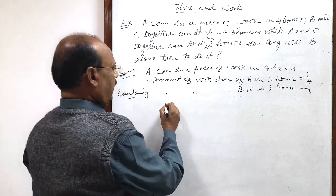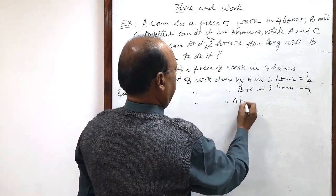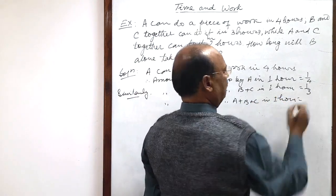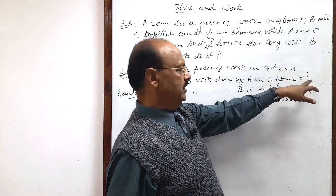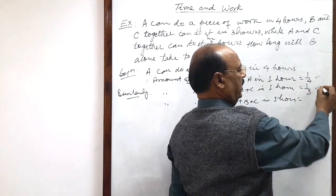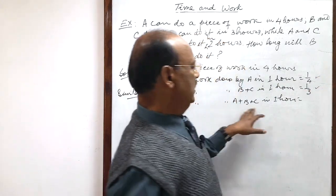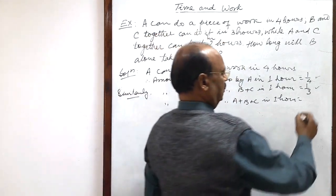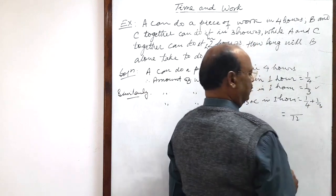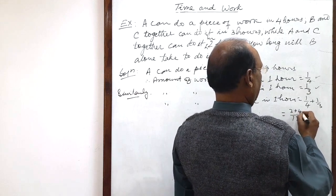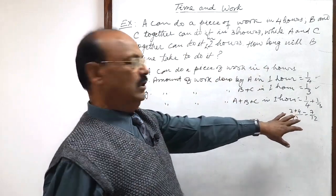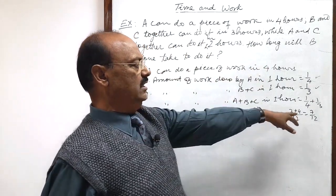So, the amount of work done by A plus B plus C in 1 hour will be the sum of these two: the amount of work done by A plus the amount of work done by B and C in 1 hour. That is 1 by 4 plus 1 by 3. The LCM is 12, so 3 plus 4 equals 7, giving us 7 by 12. This is the amount of work done by A plus B plus C in 1 hour.